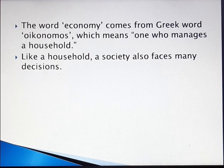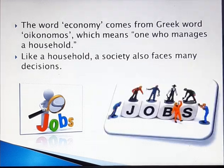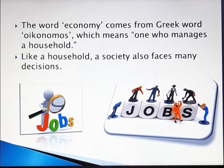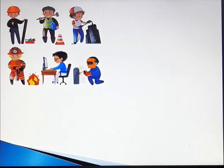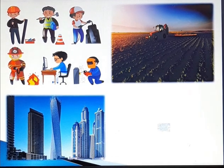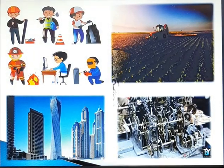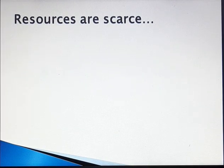A society must find some way to decide what jobs will be done and who will do them. It needs some people to grow food, other people to make clothing, and still others to design computer software. Once society has allocated people, land, buildings and machines to various jobs, it must allocate the output of goods and services they produce. The management of resources is important because resources are scarce.